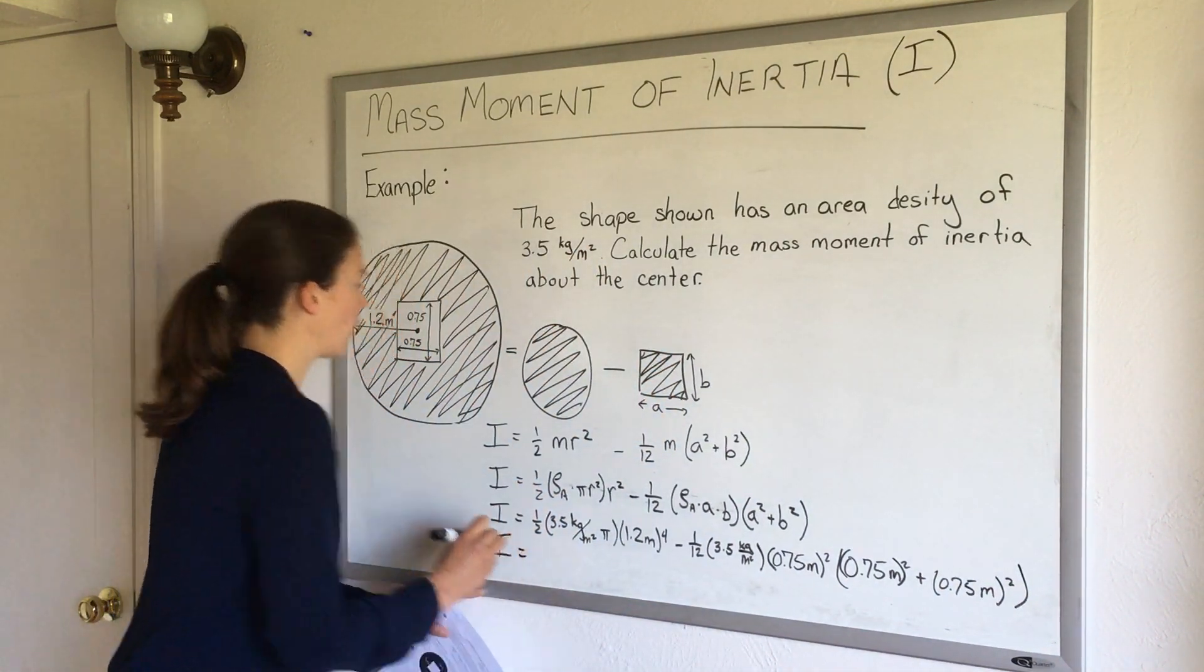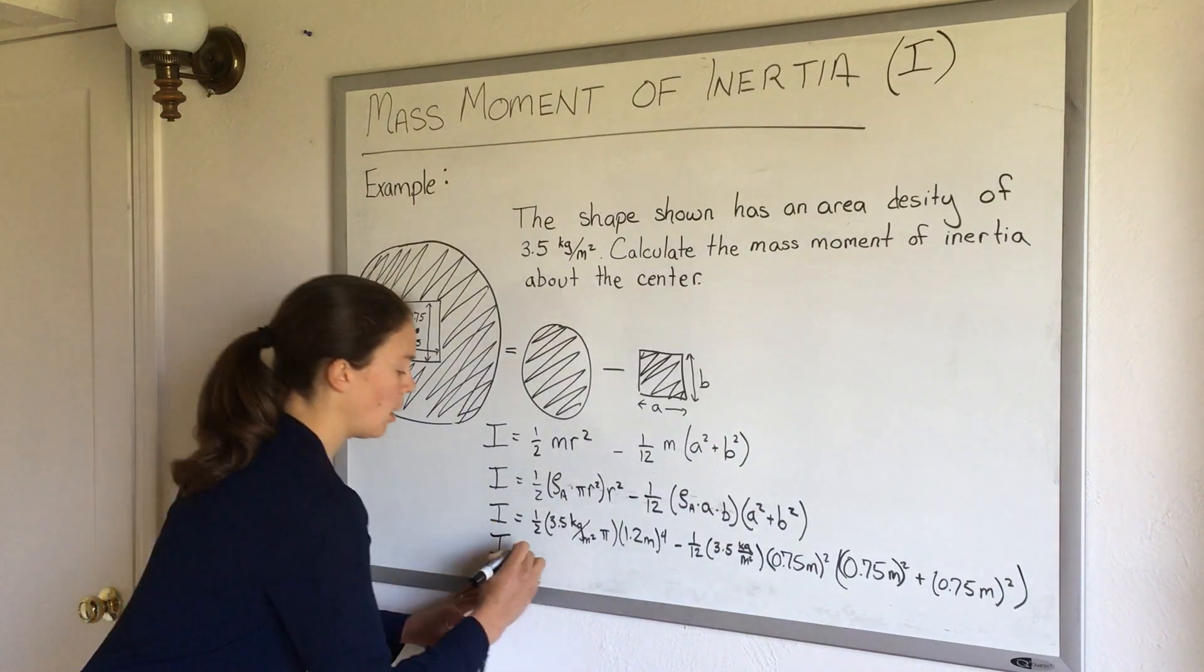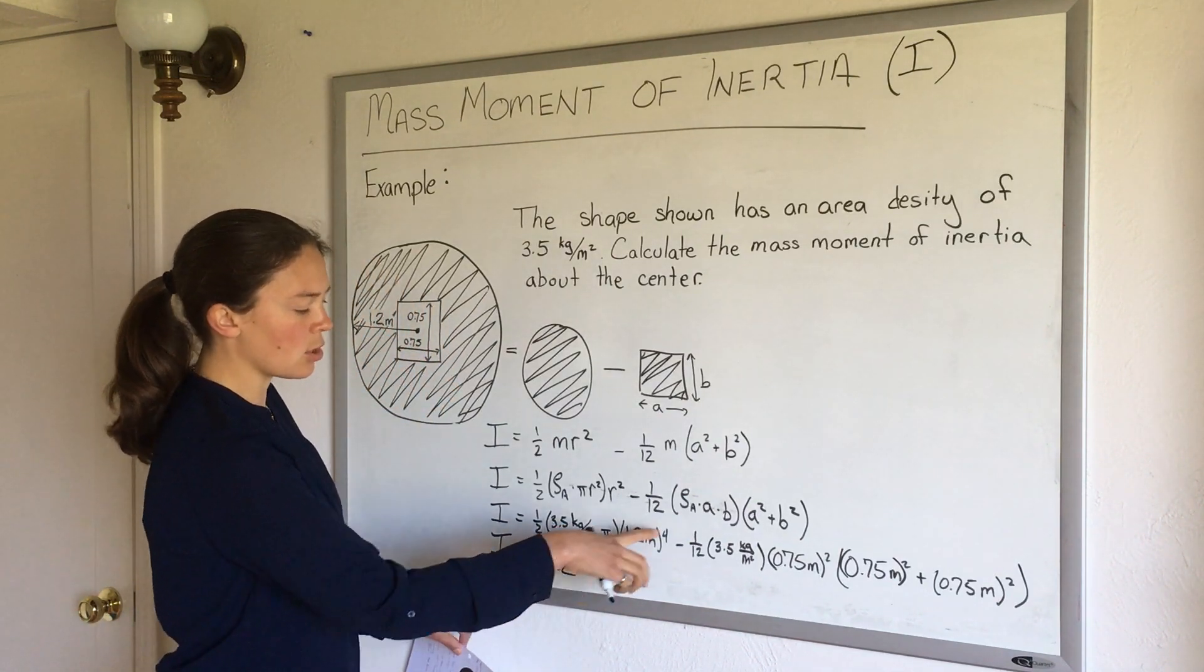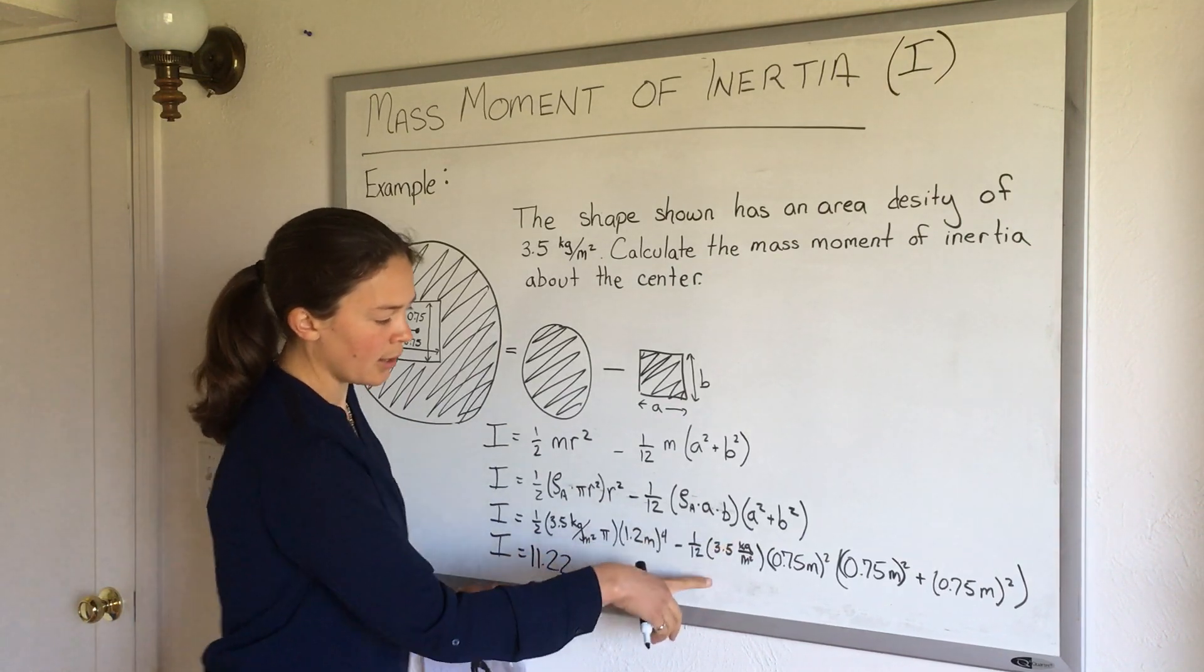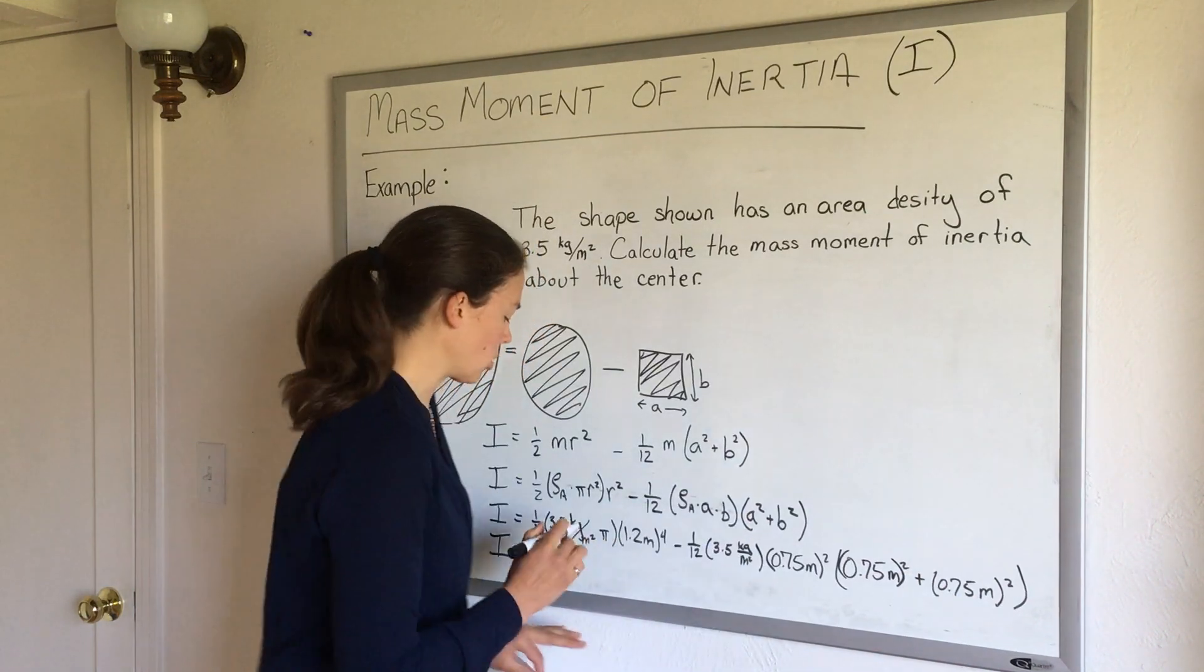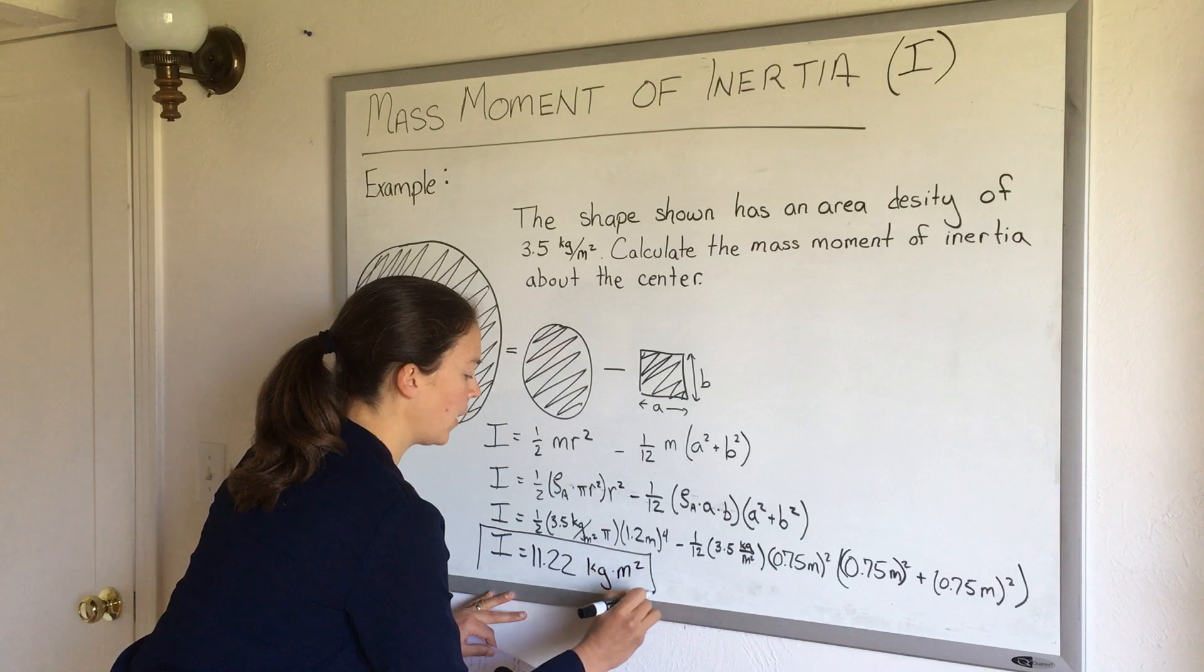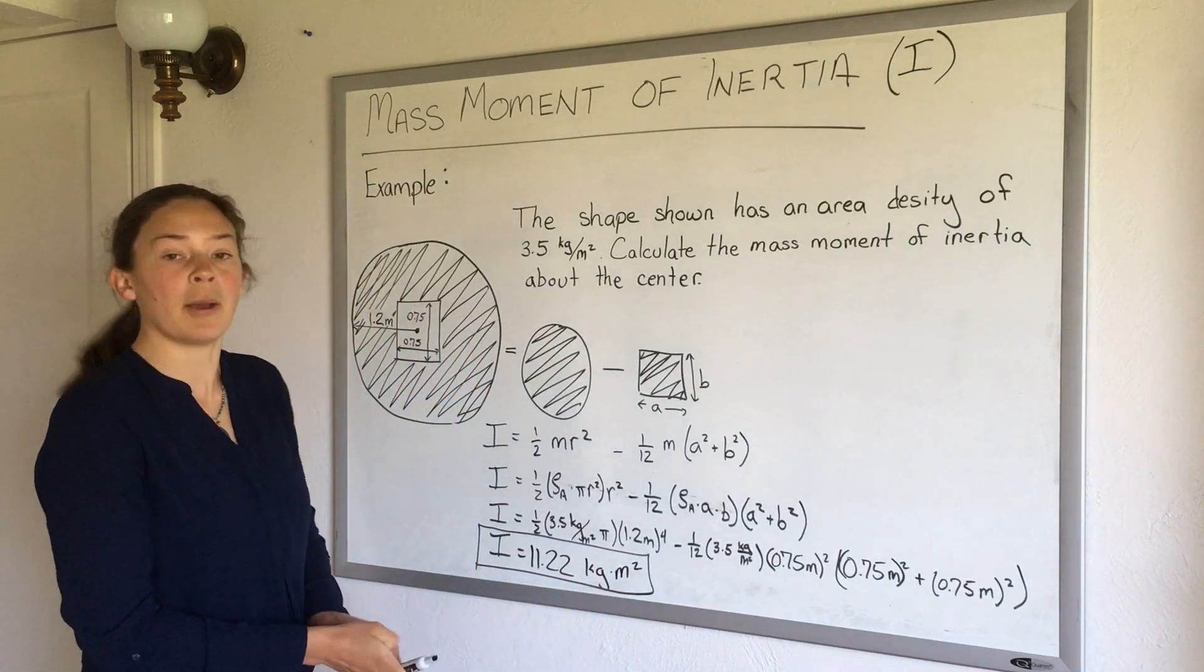And this gives me a mass moment of inertia of this object about the center of 11.22 and my units in both places should be kilogram meters squared. So here I had meters to the fourth over meters squared, so that's meters squared. And kilograms at meters squared on the bottom, that'll cancel out with these meters squared here, I'll have extra meters squared. So in both cases, kilogram meters squared. So a final answer, 11.22 kilogram meters squared.